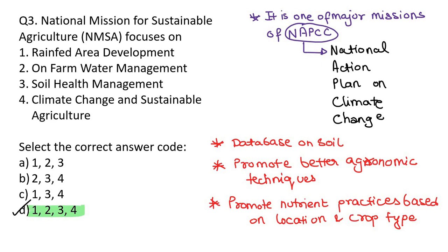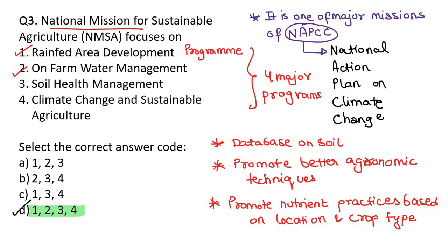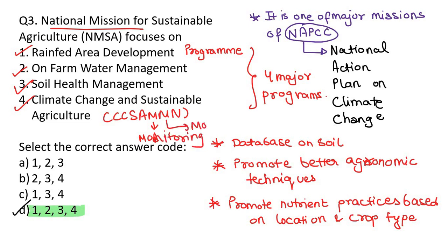What are the four major programs? First is rain-fed area development. Second is on-farm water management. Third is soil health management. Fourth is climate change and sustainable agriculture, also known as CCSAMM N — Climate Change and Sustainable Agriculture with Monitoring, Modeling, and Networking.